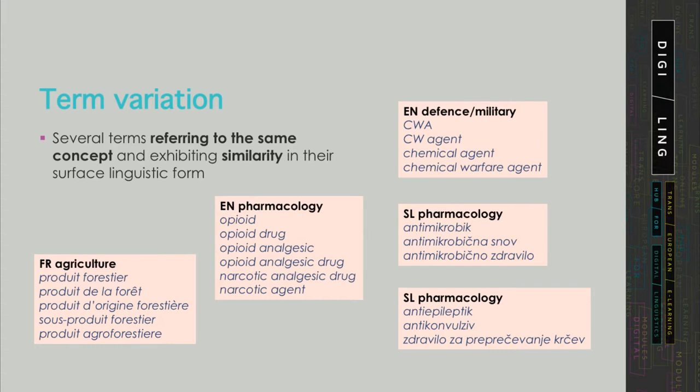On the other hand, while 'opioid,' 'opioid drug,' and 'opioid analgesic' are clearly related, 'narcotic agent' and 'opioid drug' may be synonymous terms — and they were in fact found under the same entry in IATA — but they are not variants because their surface forms are quite different. To look at another example from the defence domain, 'CWA' and 'chemical warfare agent' can be considered variants because the first is derived from the latter by retaining only the initial letters.